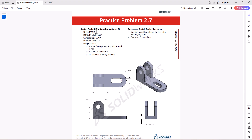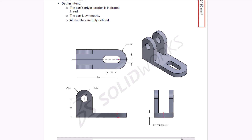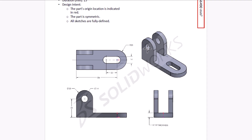Looking at this geometry, this is clearly a symmetric geometry and we have different views — the top view, front view, and the right view. My approach is to first focus on the base of the geometry, then focus on the two vertical features. We can model one of them and then use the Mirror command to make the second one. With that introduction, let's jump into SOLIDWORKS and start modeling.